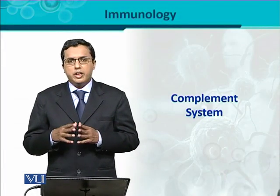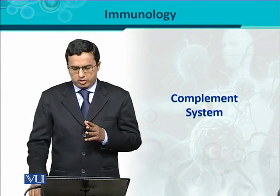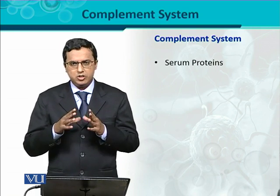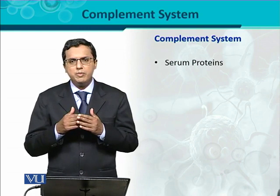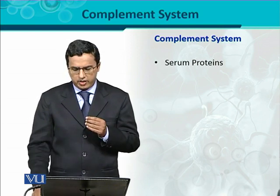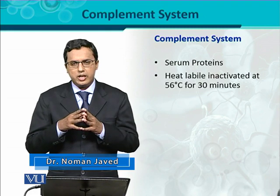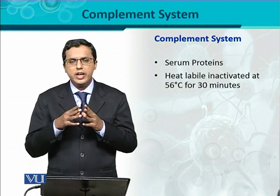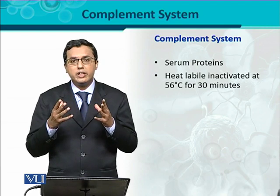The complement system is one of the important systems of the innate immune system. It is comprised of complement proteins, which are present in blood serum or plasma. One of the important characteristics of these proteins is that they are heat labile — meaning if serum or plasma is kept at 56 degrees centigrade for 30 minutes, these complement proteins get inactivated.